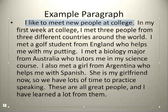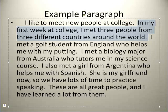Here is our topic sentence: I like to meet new people at college. Everything else in this paragraph should somehow relate back to that idea, that first sentence — why do I like to meet new people at college? In the second sentence, we find that this person met three different people from three different countries around the world in just his first week at college. This gives us some additional information on what kind of people this person is meeting, and perhaps the variety — the idea of meeting people from different countries — is actually very exciting.